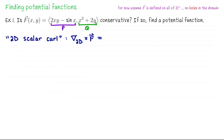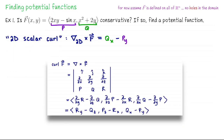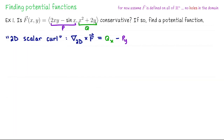This is not the true curl of a vector field, because the true curl is only defined on vector fields in R3, so this is not a real cross product. What the 2D scalar curl is, is Qx minus Py. If we look back at the true curl, you'll see that's the third coordinate of the curl of a vector field in R3. So there is a connection.